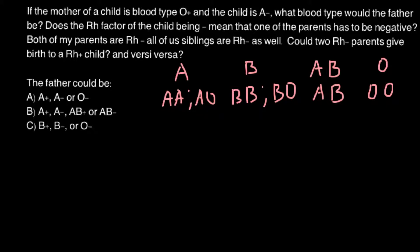That is why we use the positive sign and negative sign. A positive sign means that the protein is present, and a negative sign means that the protein is missing. We can also say Rh present and Rh absent — it would mean the same thing.